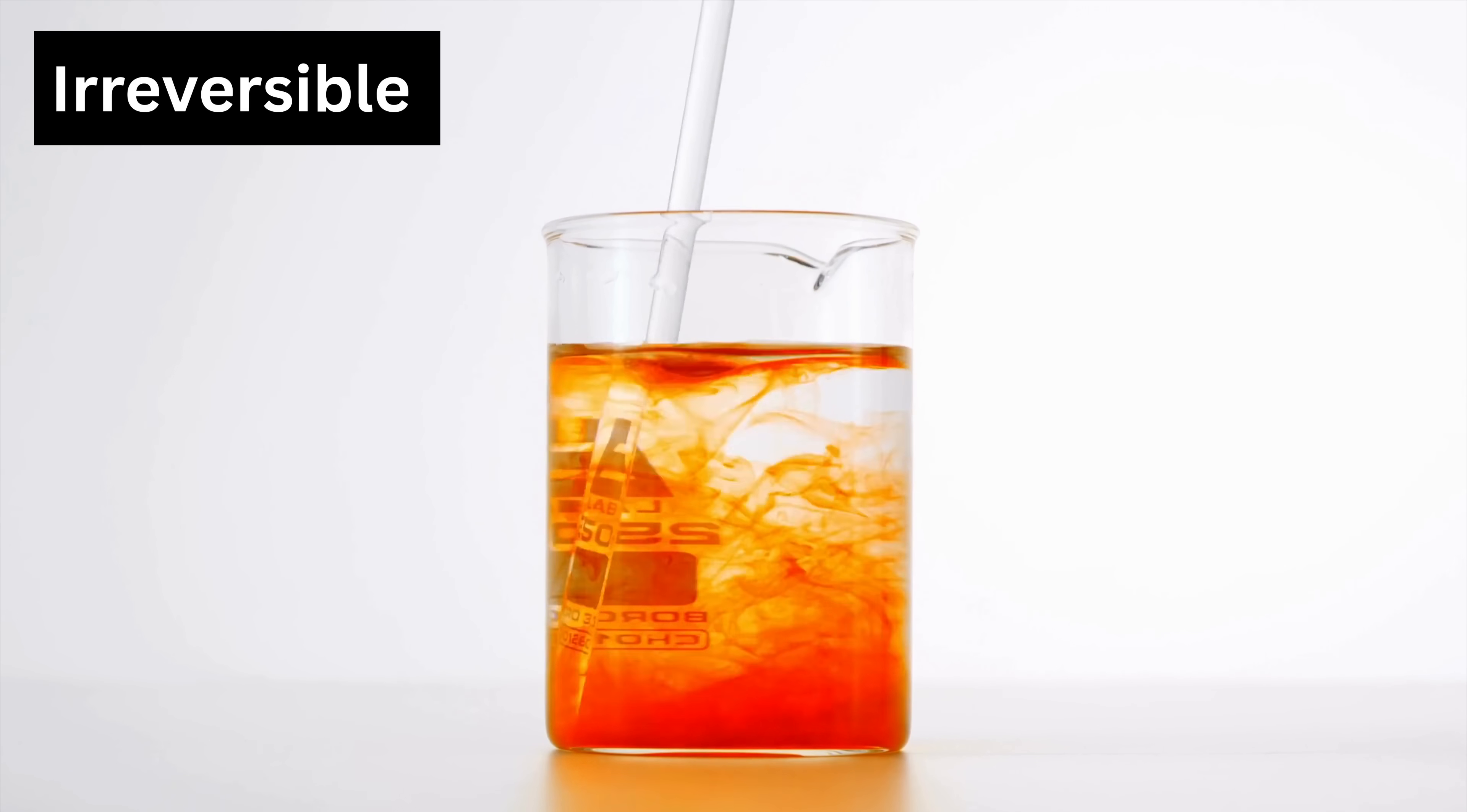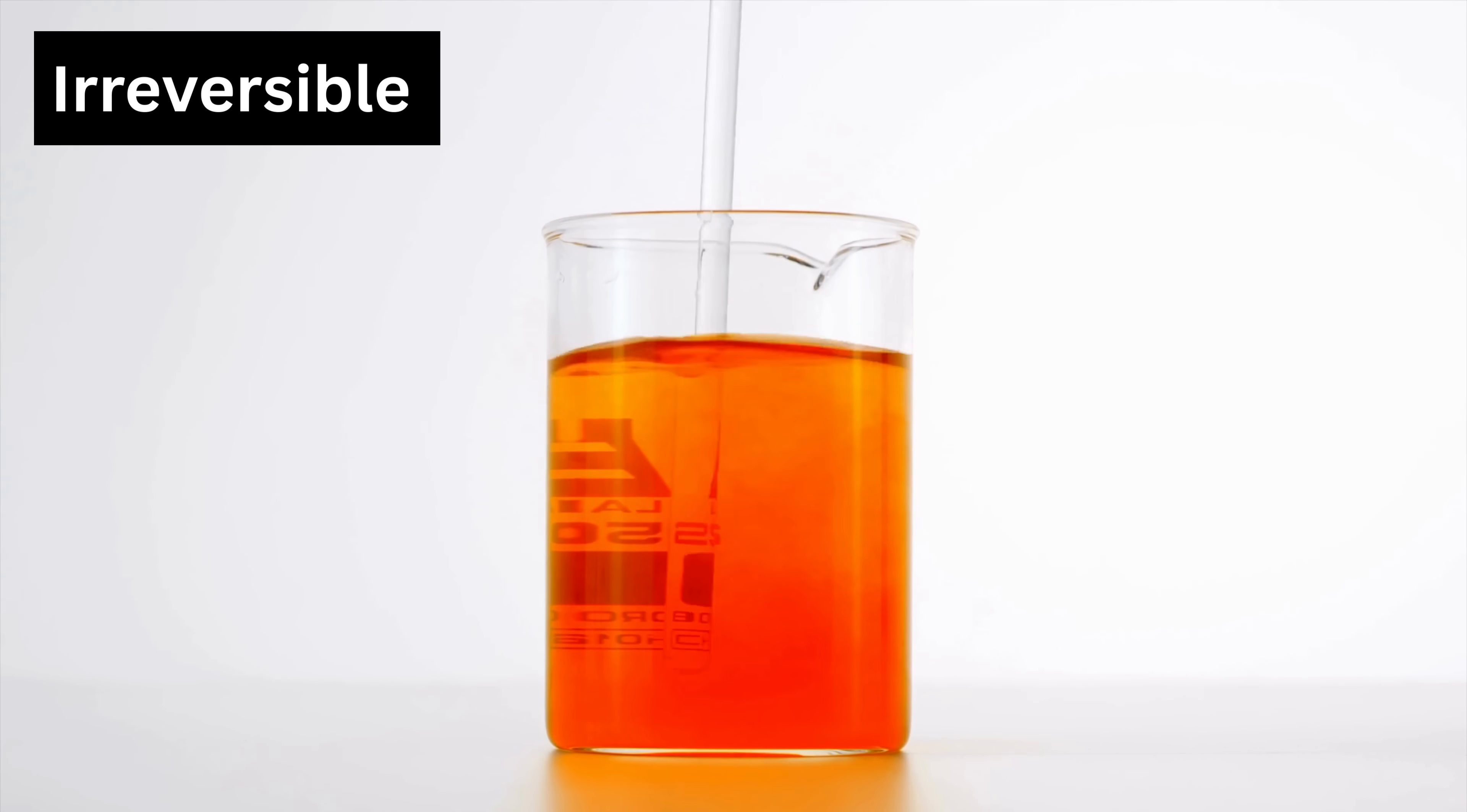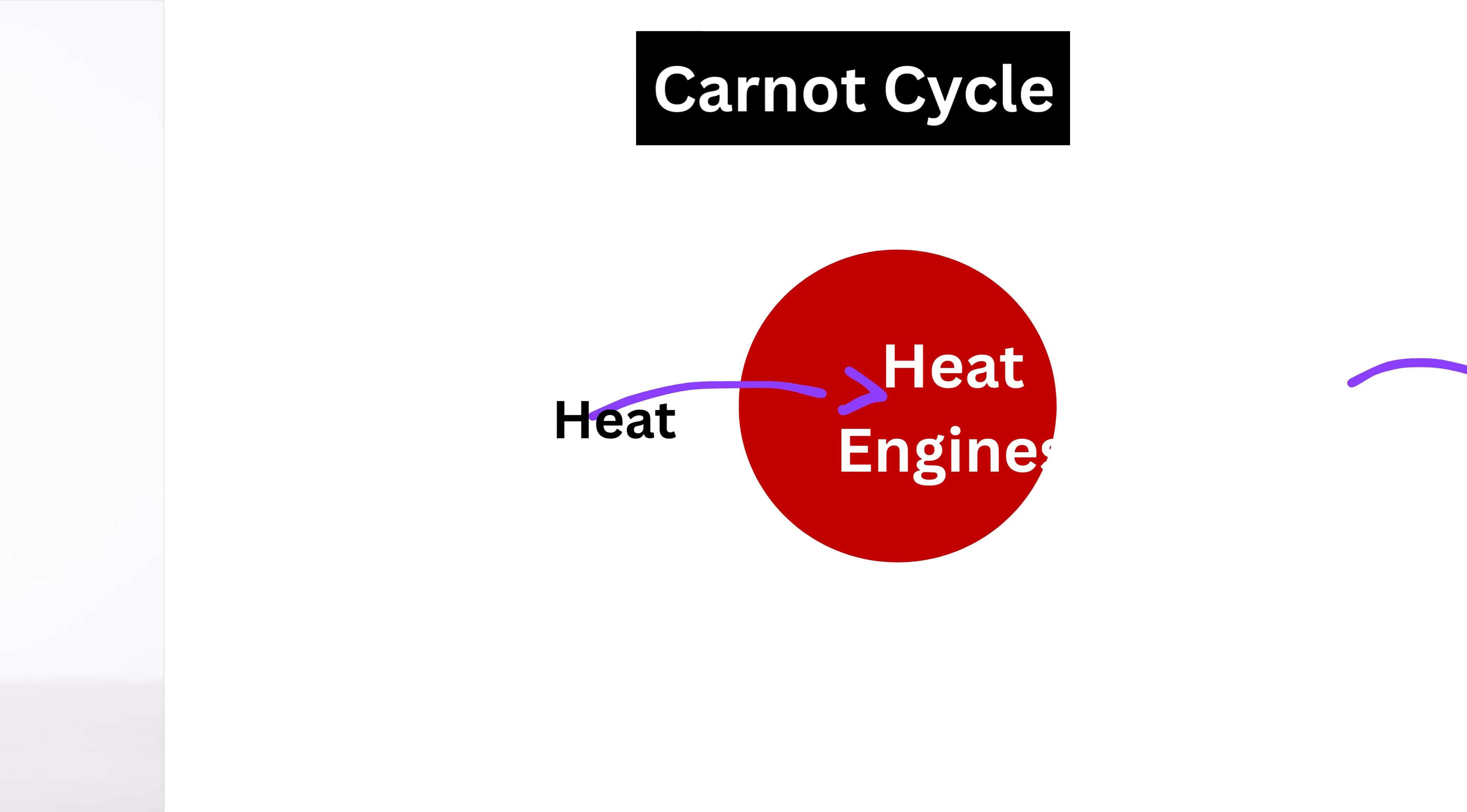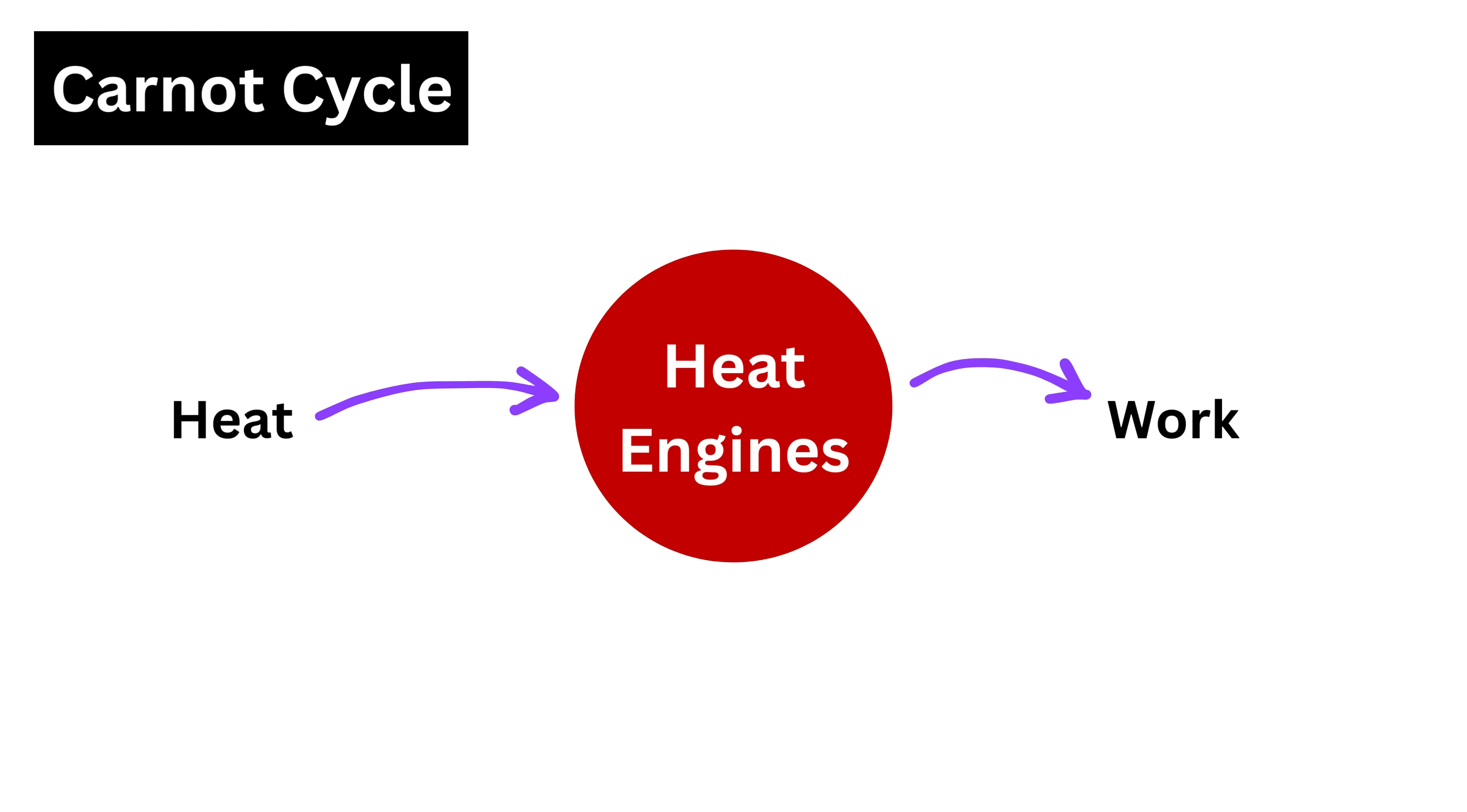Once it happens, you can't simply reverse it, which means you cannot bring the system and surroundings back exactly to their original state. What is gone is gone. The Carnot cycle is built on the idea of all processes being perfectly reversible.